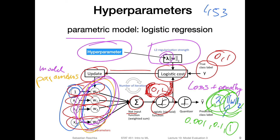This is a parametric model because we define the structure of the model upfront before we fit the parameters — here we have the Ws and we fit the Ws. In the case of decision trees, we don't have weight parameters; we just grow the tree based on the data, so the structure of the tree depends on the data — that's why we call it a non-parametric model. I wouldn't get too hung up on the terms; it's just jargon used in statistics and machine learning that you may encounter in practice.